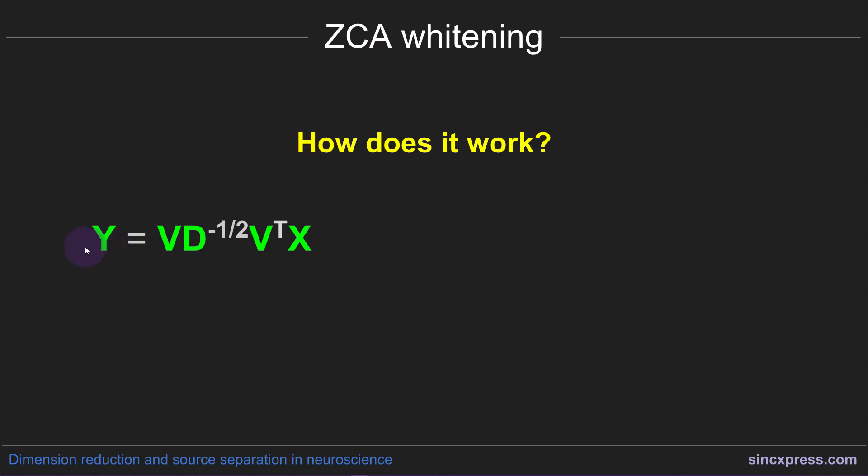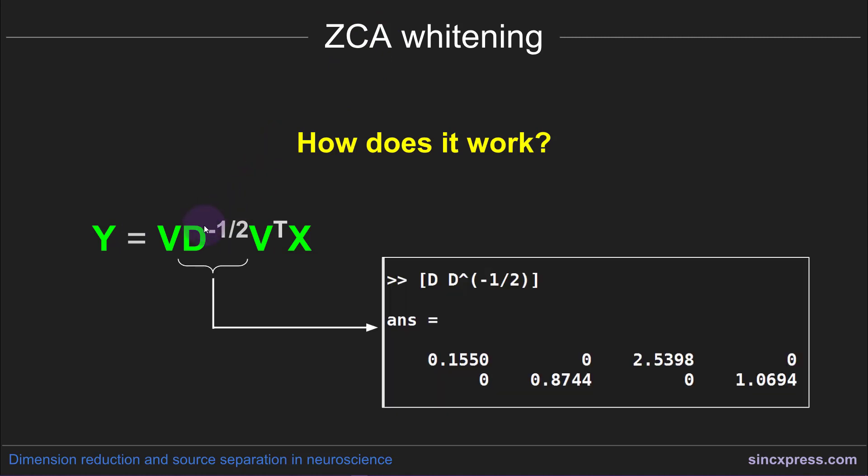So then you've successfully applied ZCA. And then you can continue with your generalized eigenvectors on the data in matrix Y instead of matrix X. So that's the formula for how to implement ZCA. And now I want to tell you what it means and why it works.